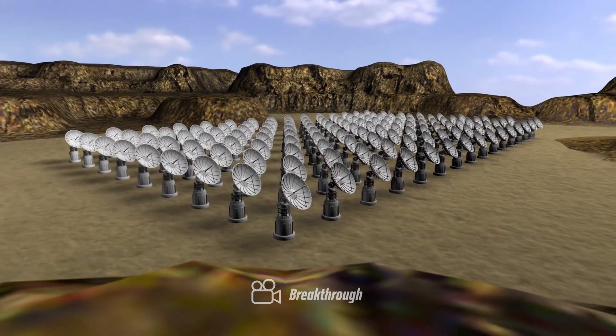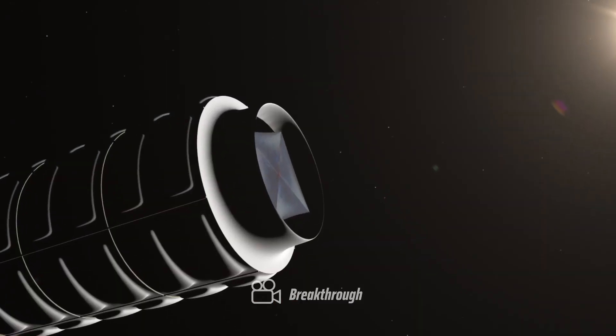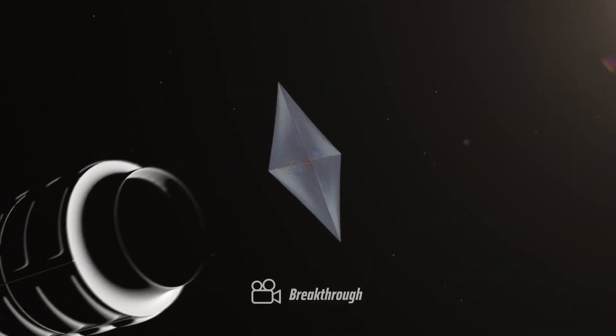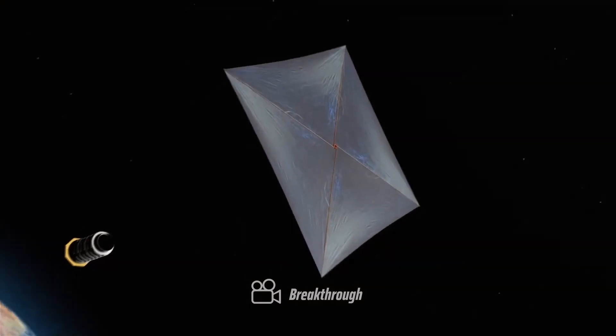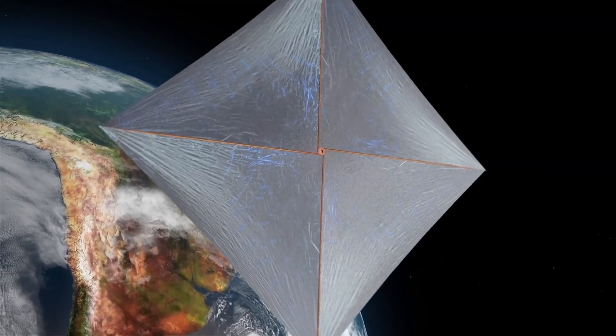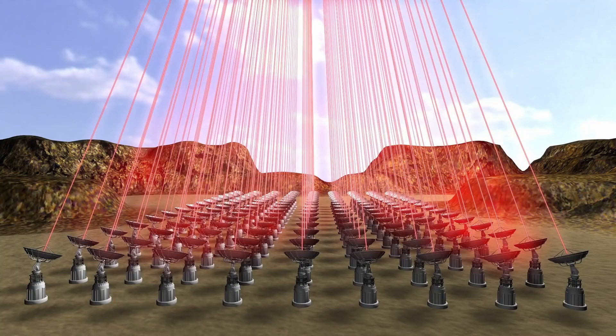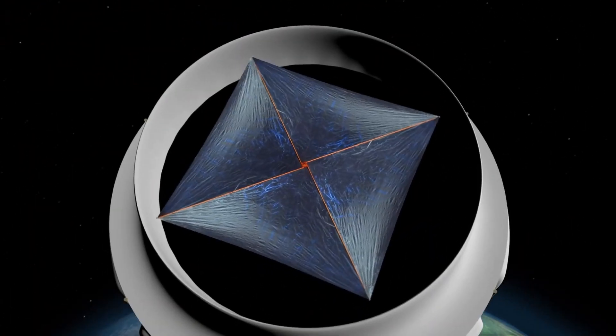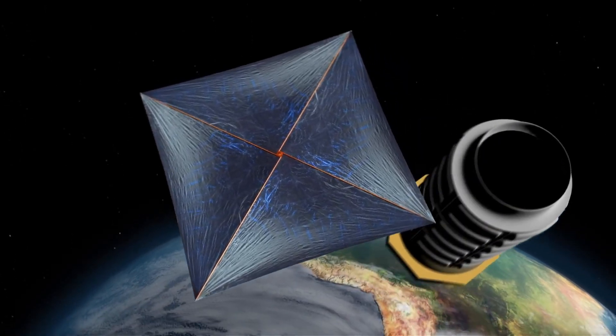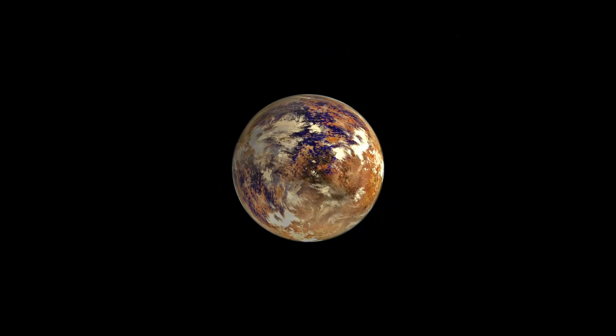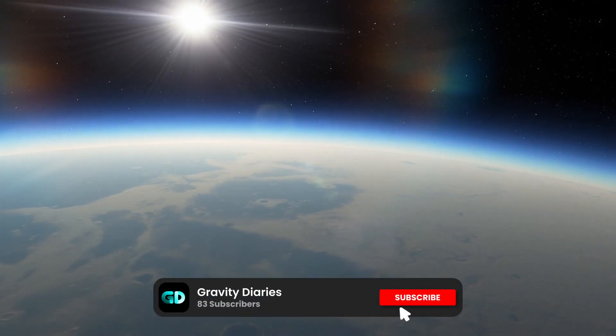This initiative intends to employ microprobes traveling at 20% of the speed of light, driven by powerful Earth-based lasers generating around 100 gigawatts of energy. These probes would conduct a flyby of Proxima Centauri, collecting photographs and data on the atmospheric compositions of its planets.